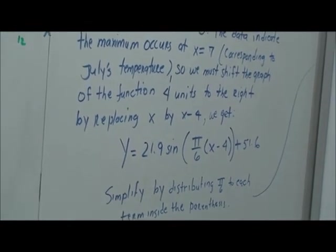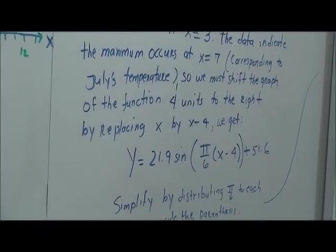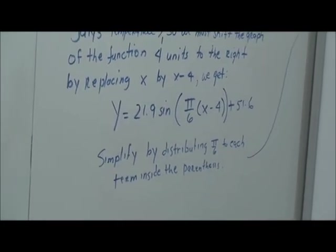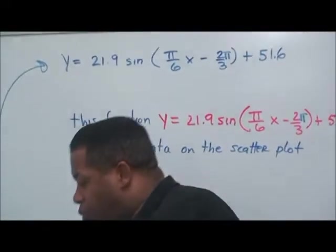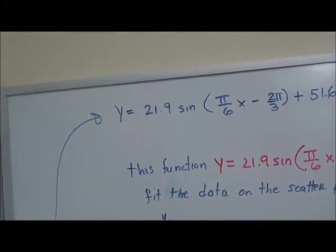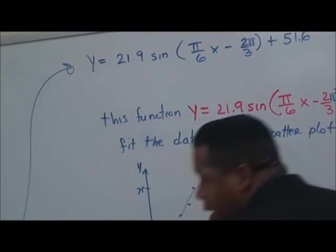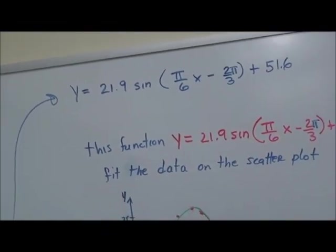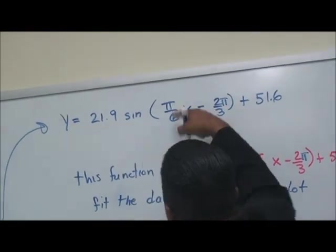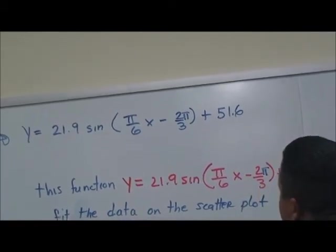Y is equal to 21.9 sine times pi over six times, here we go, we're plugging this in, x minus four plus 51.6. So, we simplify by distributing pi over six to each term inside the what?